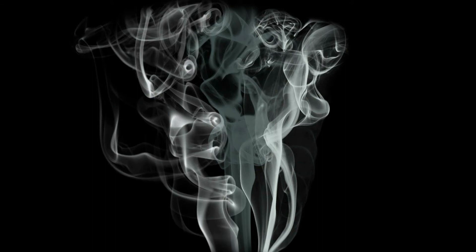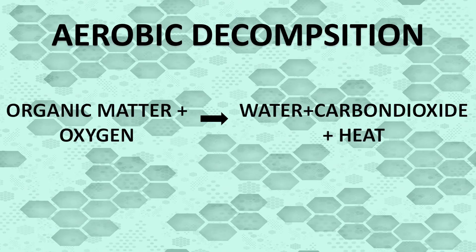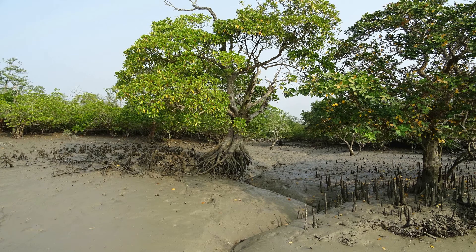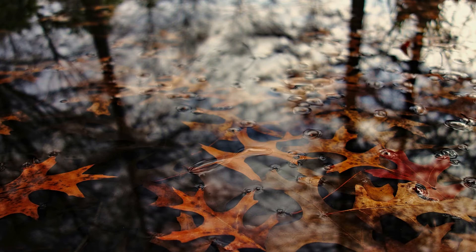They are called swamp gas or marsh gas, that develops from the breakdown of organic matter in wet areas. The normal decomposition of organic matter in open air is called aerobic decomposition, which occurs in the presence of oxygen. The by-products of aerobic decomposition are water, carbon dioxide, and heat. But in swampy and marshy areas, aerobic decomposition is often unable to take place due to wet soil and water. Instead, the dead matter is buried under water and wet soil, where it continues to decompose in the absence of air.